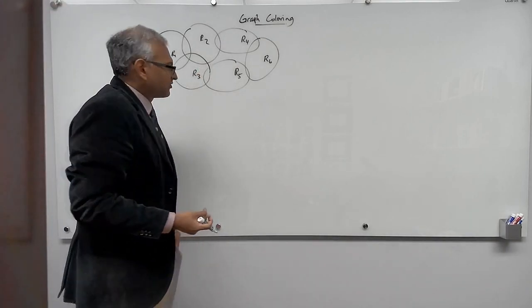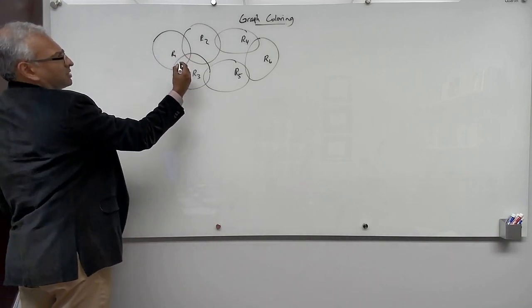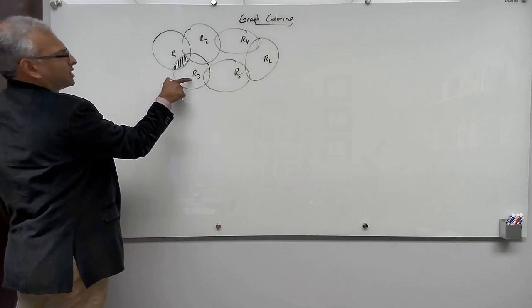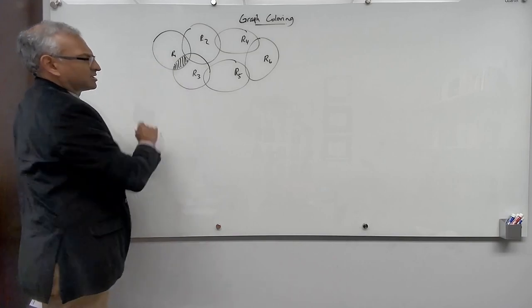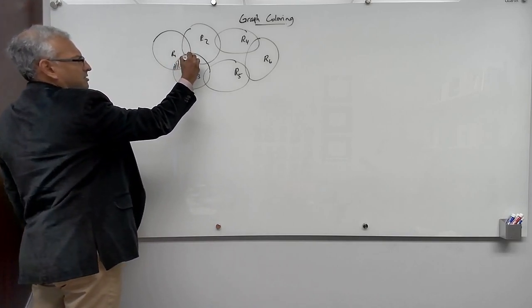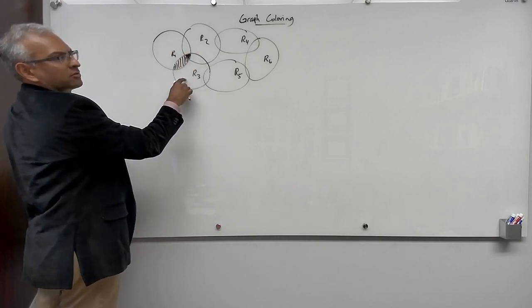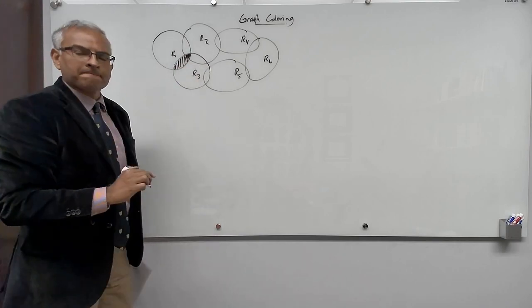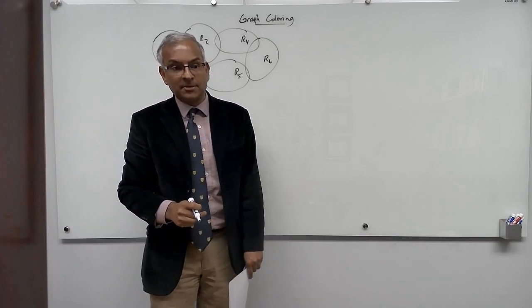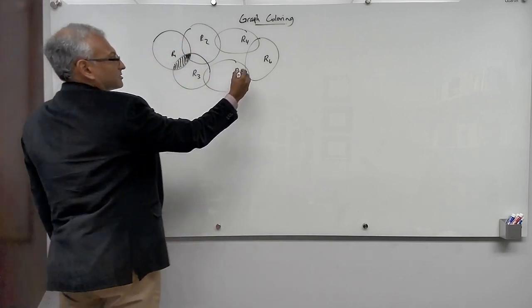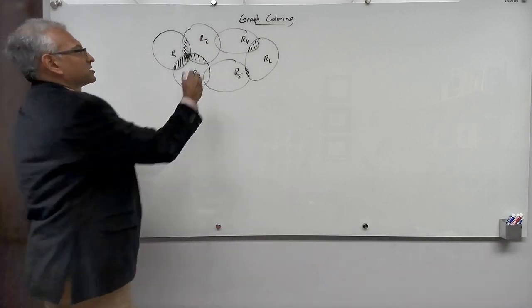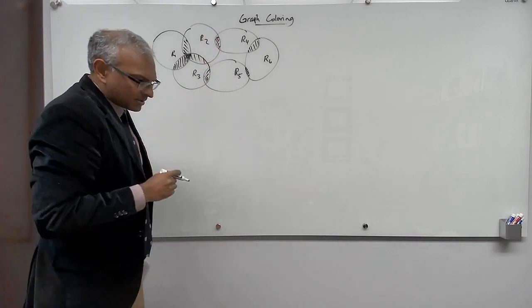Consider a listener in this region — they can hear both r1 and r3. If both broadcast at the same frequency, this listener will hear garbage. Similarly, a listener in this region at the intersection of r1, r2, and r3 — if any two of them share a frequency, that listener hears garbage. Where two regions intersect, the corresponding radio stations must use different frequencies.